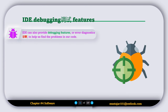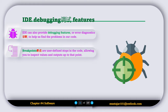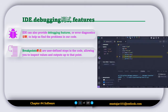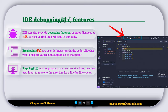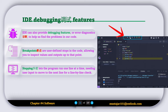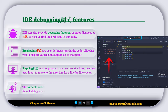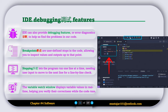An IDE can also provide debugging features to help find and fix problems in your code. The first feature is breakpoints, which are user-defined stops in the code that allow you to inspect values and output up to that point. The next feature is stepping, or step-by-step execution, which lets the program run one line at a time requiring user input to move to the next line, helping to check the code line by line. The variable watch window displays variable values in real time, helping you verify their correctness while the code runs.